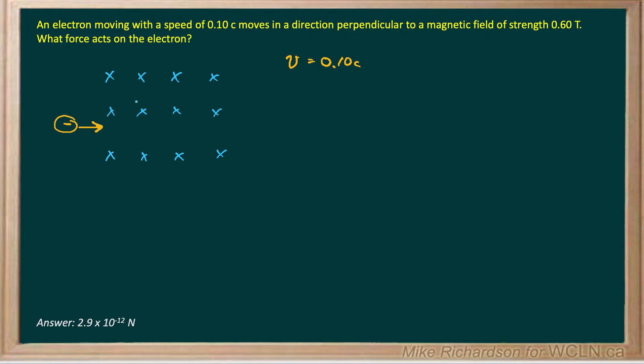So my magnetic field I've represented with these x's, so we're imagining in this case it's into the page. They don't state it, as long as it's 90 degrees we're okay. And my electron, we'll say, is traveling from left to right.